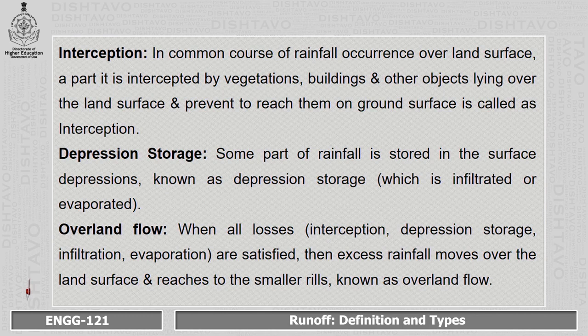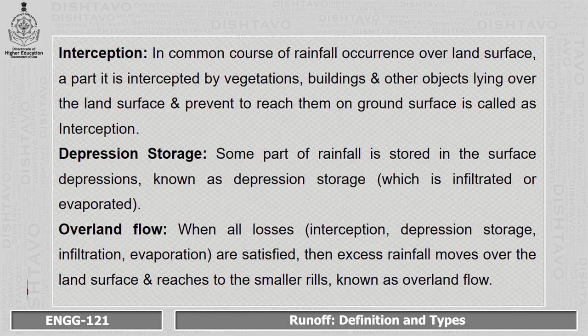Next is interception. In the common course of rainfall occurrence over a land surface, a part of the rainfall is lost due to vegetation, buildings, or any objects before it reaches the ground surface. These losses are called interception or interception losses. Next is depression storage — some part of the rainfall is stored in surface depressions or small pits, which is known as depression storage.